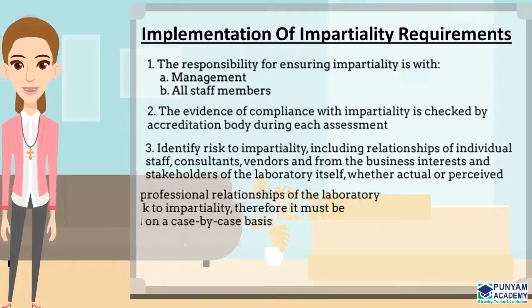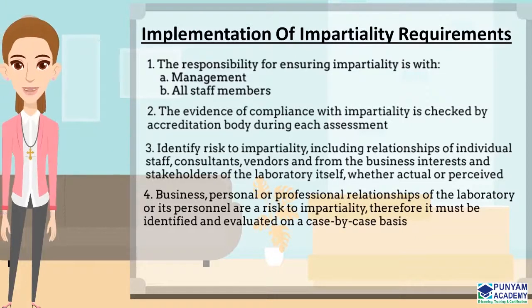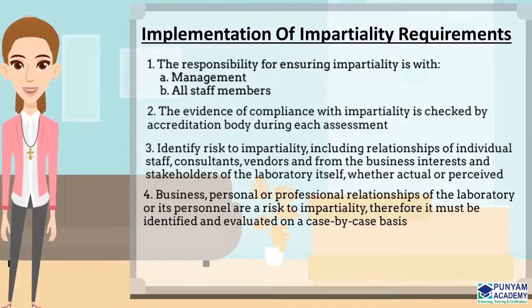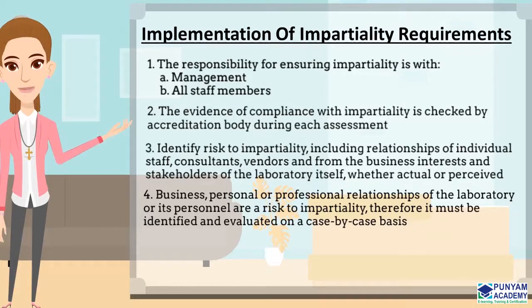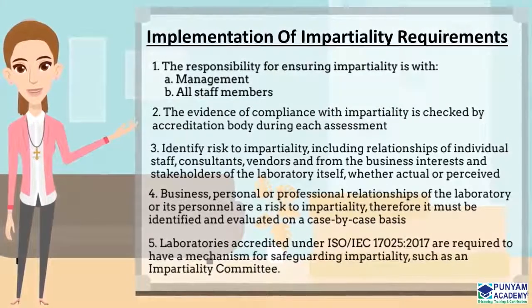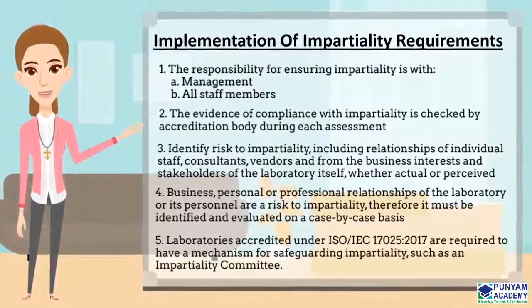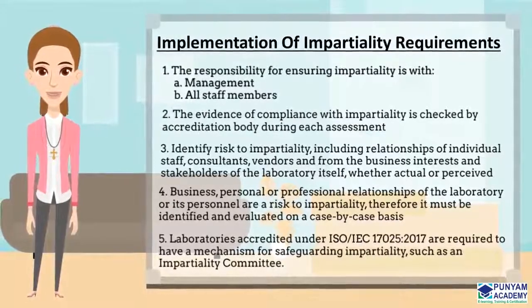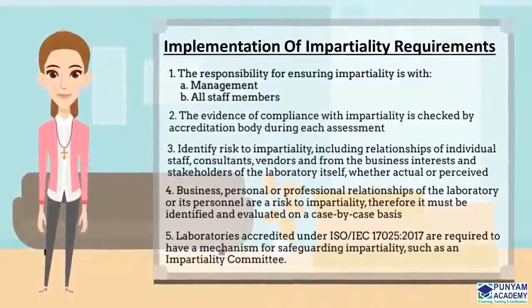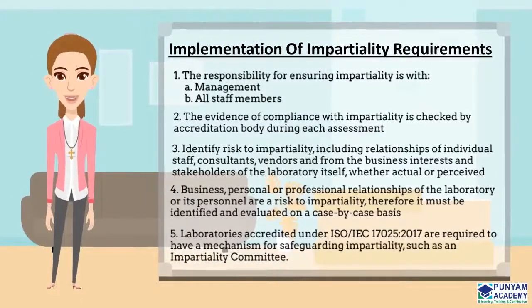(4) Business, personal, or professional relationships of the laboratory or its personnel are a risk to impartiality; therefore they must be identified and evaluated on a case-by-case basis. (5) Laboratories accredited under ISO IEC 17025-2017 are required to have a mechanism for safeguarding impartiality, such as an impartiality committee. Knowing these points will help you to put the impartiality requirements into practice.